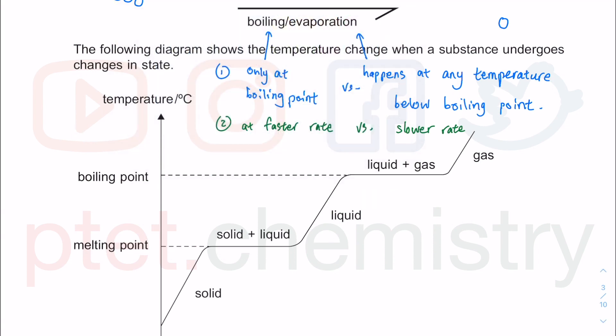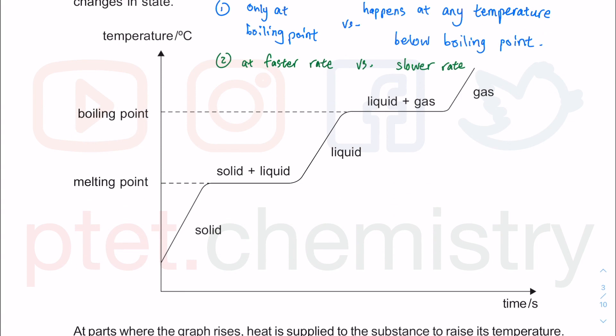Let's talk about this kind of curve — this is a graph. Importantly, when dealing with any graph you need to look at the axes. There is a label, then a stroke, then the units. This is a unit of time — could be seconds, minutes, or hours, but we are labeling it as time in seconds here. And this axis is temperature.